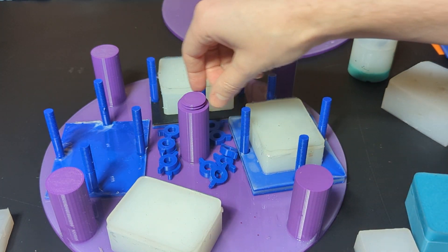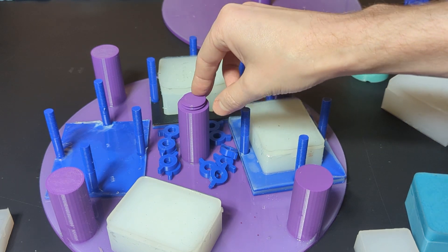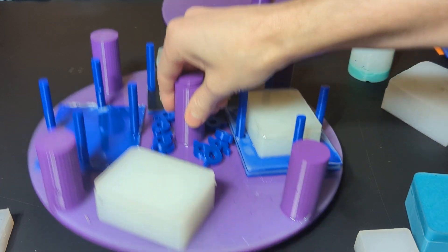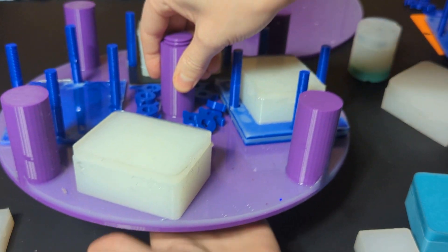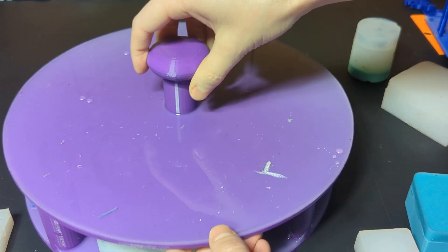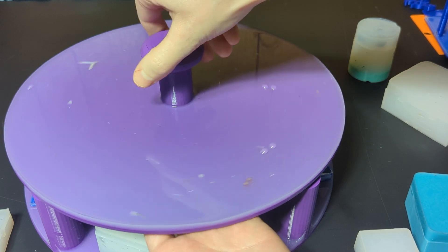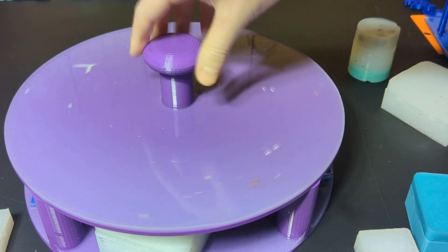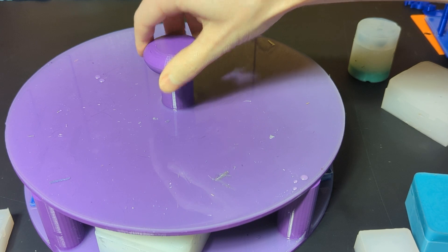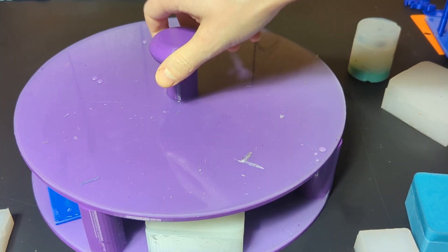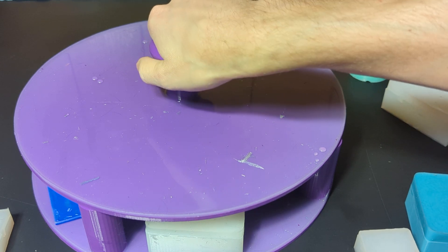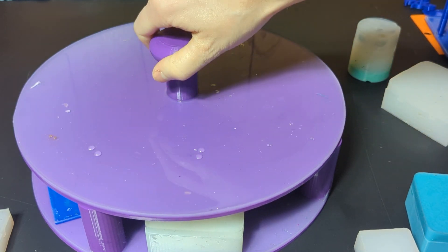And it also has threads on the top to thread on to either another layer, because there's threads at the bottom of this just like on the lid. And then you can just put together as many tiers as you want. I've only used two but I do have four printed.